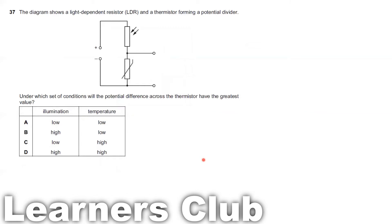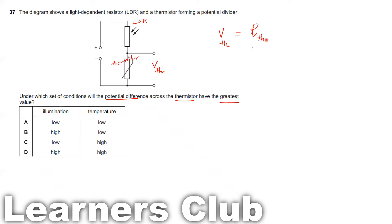Question 37. The diagram shows an LDR and thermistor forming a potential divider. We need to find the condition where the potential difference across the thermistor has the greatest value. The formula for a potential divider gives the output voltage as the thermistor resistance divided by the combined resistance, multiplied by the EMF.